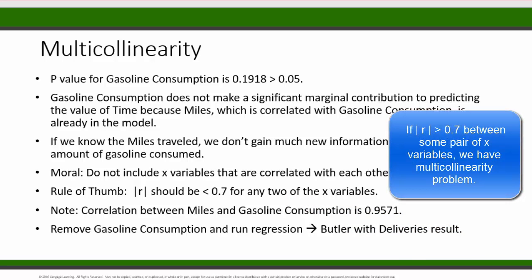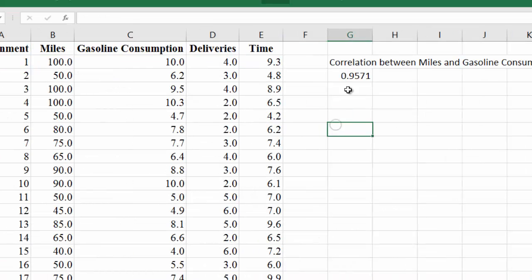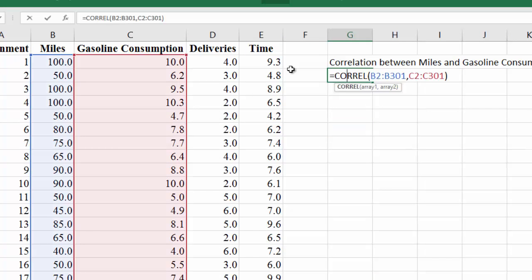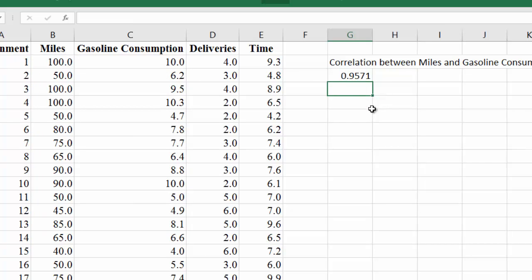Here is a rule of thumb. If the absolute value of the correlation between those two x variables is higher than 0.7, then we have multicollinearity. Here, when we compute the correlation between the miles and gasoline consumption, we get 0.9571, definitely higher than 0.7.